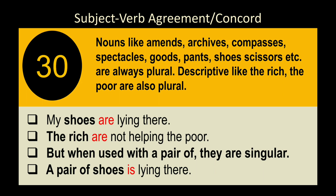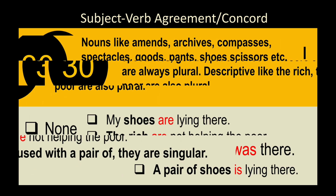Rule 32: Nouns like 'amends,' 'archives,' 'compasses,' 'spectacles,' 'goods,' 'pants,' 'shoes,' 'scissors,' etc. are always plural and take plural verbs. Descriptive adjectives preceded by 'the' (like 'the rich,' 'the poor') are also plural. Example: 'My shoes are lying there.' 'The rich are not always happy.' However, when used with 'a pair of,' they become singular: 'A pair of shoes is...' — shoes are two but the pair is one unit.